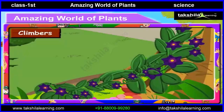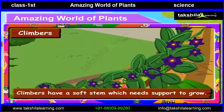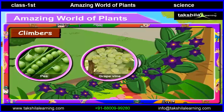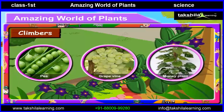Now let us learn about climbers. Climbers have a soft stem which needs support to grow. Pea, grapevine and money plant are examples of climbers.